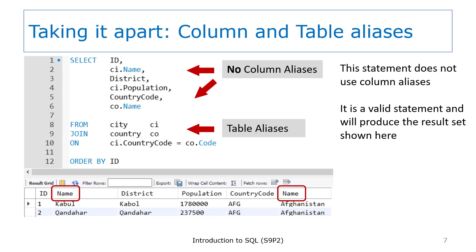Here you see what happens when you do not assign a column alias and you have columns in both tables that have the same name. In this example, both the city table and the country table have a column named name. The statement runs successfully and generates the result set shown. If you are just going to look at the result set in MySQL Workbench or export to Excel, this might be okay. But if you need to write SQL to be used in an application such as PHP, it will be much easier to work with the result set if you assign unique column names using column aliases — otherwise you would need to access both name columns based on their position within the result set.